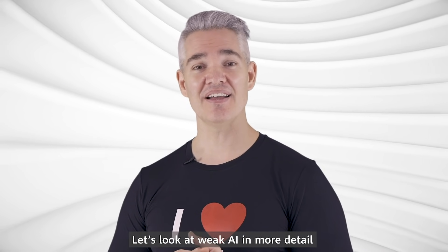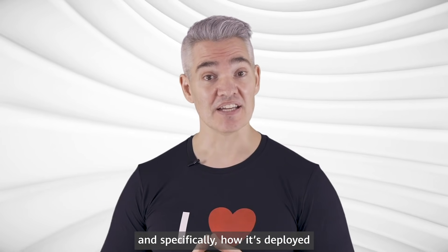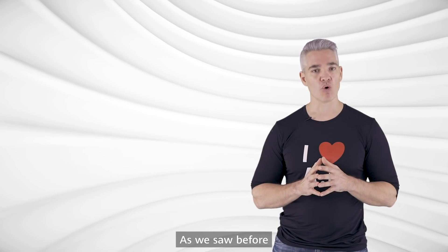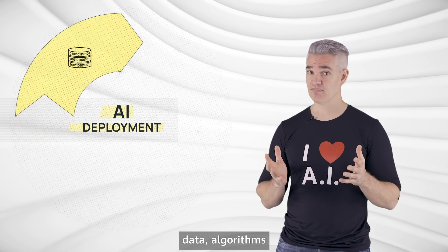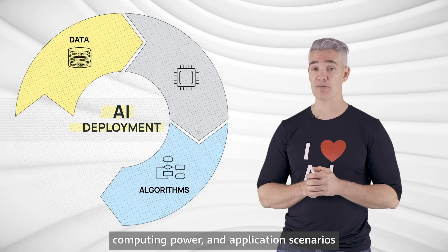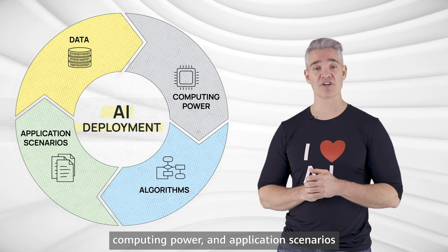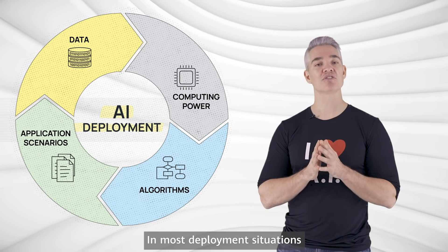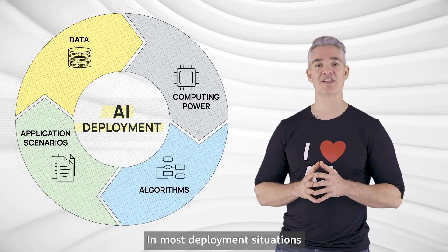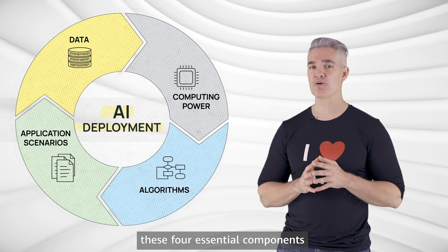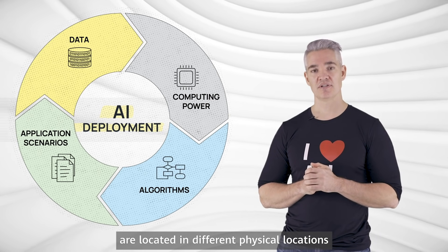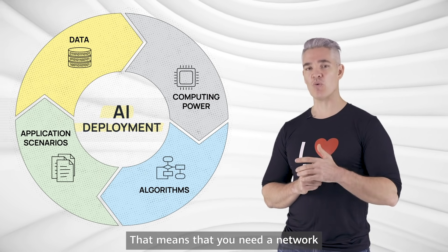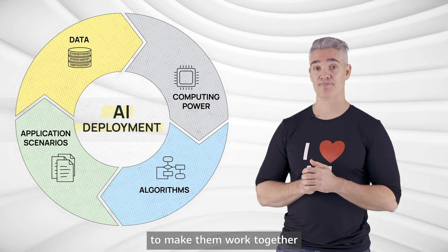Let's look at Weak AI in more detail, and specifically, how it's deployed. As we saw before, AI needs four components to operate: data, algorithms, computing power, and application scenarios. In most deployment situations, these four essential components are located in different physical locations, which means that you need a network to make them work together.